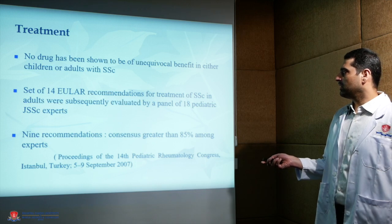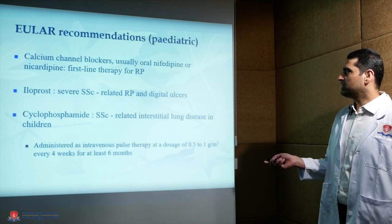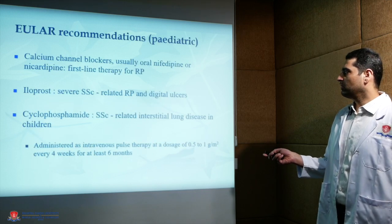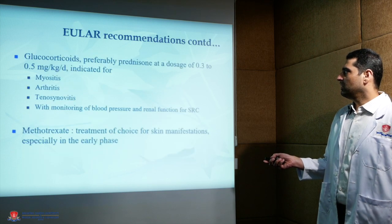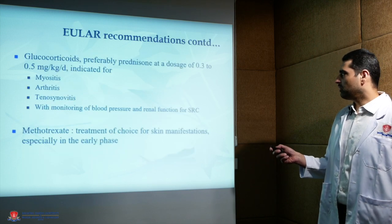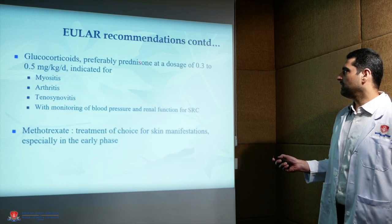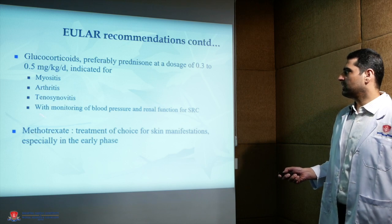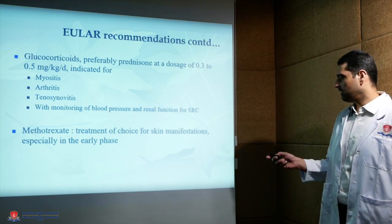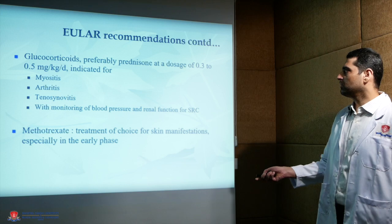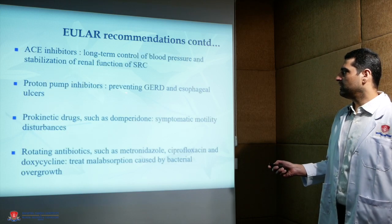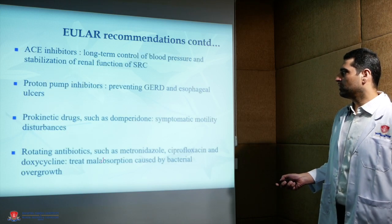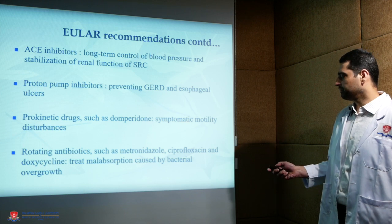For juvenile systemic sclerosis treatment, EULAR recommendations are the same for vascular disease and interstitial lung disease as in adults. Glucocorticoids are preferable for musculoskeletal involvement. For skin, methotrexate is again the drug of choice. ACE inhibitors for renal involvement, and for GI involvement, the treatment is the same as in adults.